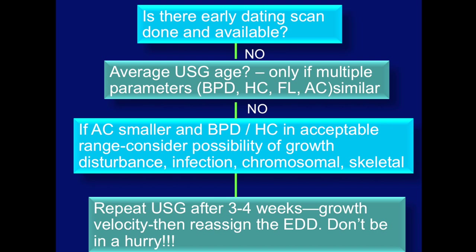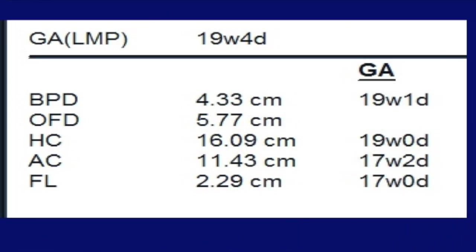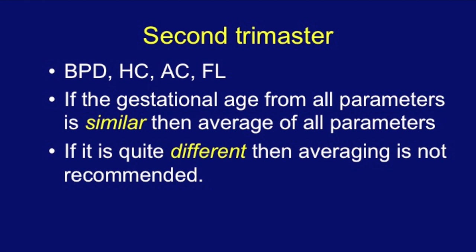Look at growth velocity and other telltale signs of infections or chromosomal abnormalities and act accordingly. In this typical report, the discrepancy is more than 10 days. The gestational age by LMP is 19 weeks 4 days. BPD and HC are at 19 weeks but AC and FL are falling short. In this situation, do not average out and say 18 weeks with a discrepancy of 11 days and reassign EDD just because the patient reports delayed periods — wait, investigate, rule out other causes, then reassign. In the second trimester, if parameters are similar, average them out; if different, averaging is not recommended.